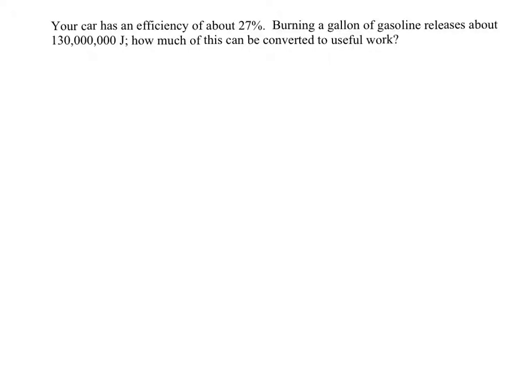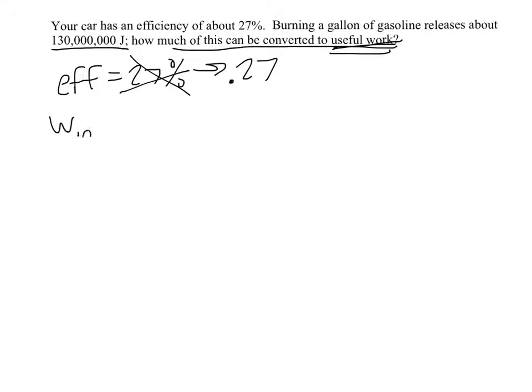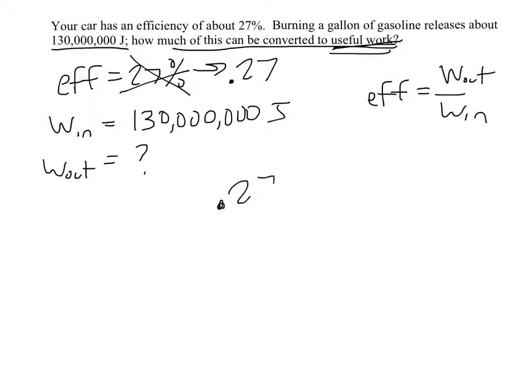All right, so this is a similar problem, except now we are given the efficiency. The efficiency is 27%, which we should probably convert to a decimal right away. We divide by 100 to make a decimal, just like we multiply by 100 to get a percent. They tell us it releases this much energy, so at first it may not be clear if that's work in or work out, but when it says how much can be converted to useful work, useful work is another way of saying the work out. So that means that the work in must be the 130 million joules. And so what we're really looking for is the work out.